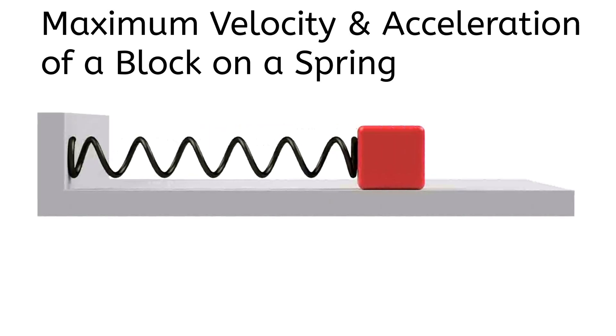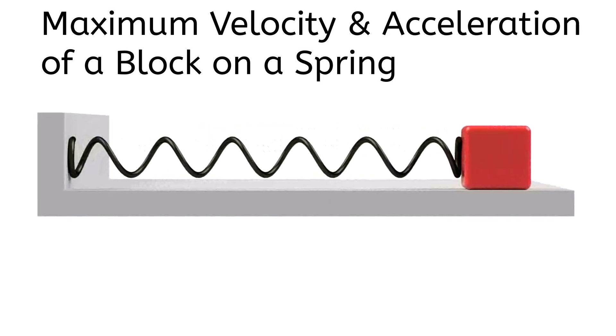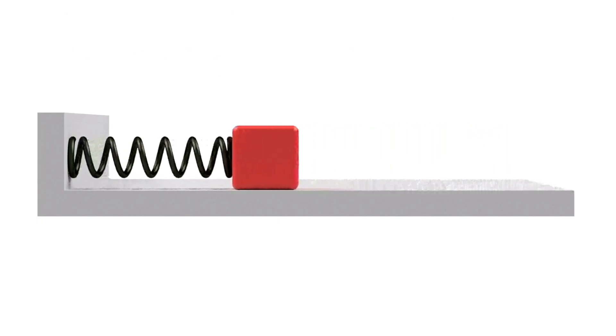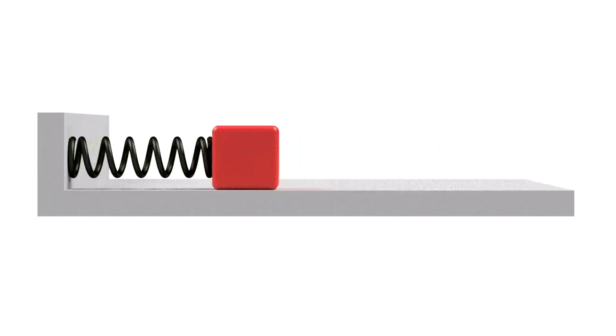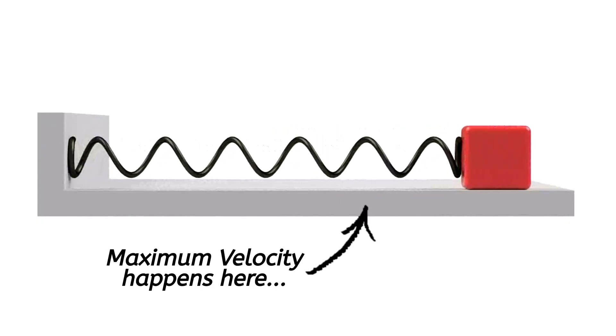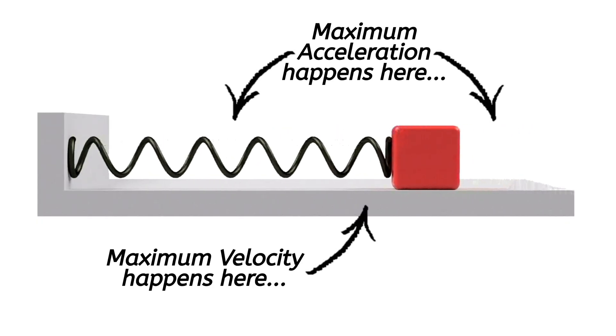We're solving for the maximum acceleration and velocity of a block oscillating on the end of an ideal spring. There are two key issues to keep in mind as we go through this problem. The first issue is the block's maximum velocity and acceleration occur at two completely different points.